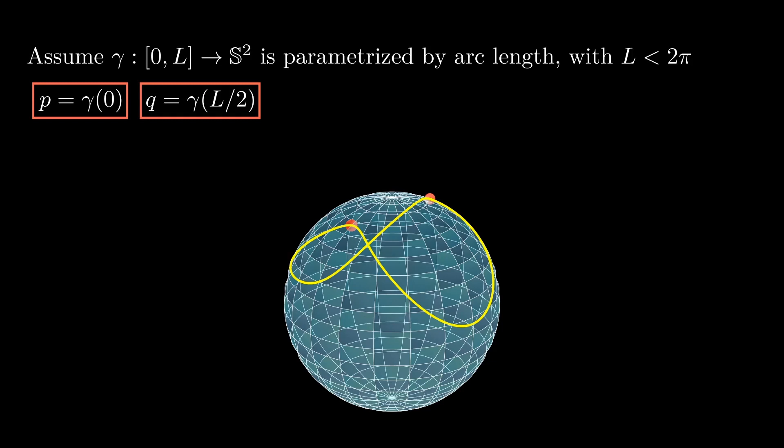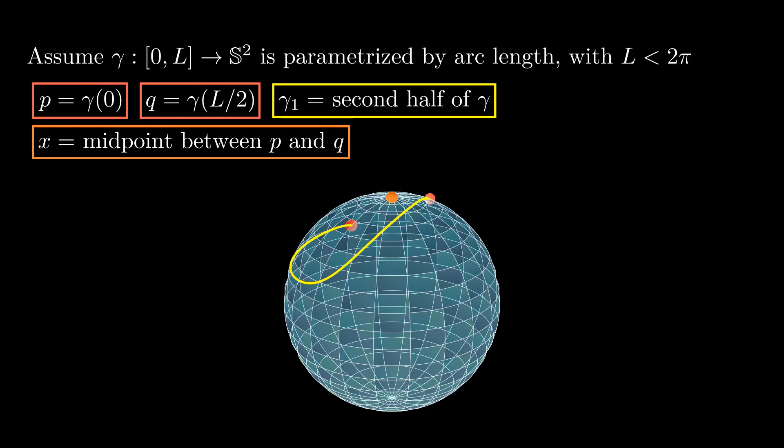Each of them has length L over 2, which is strictly less than π. Now we ignore gamma 0 and let x be the midpoint of p and q in the sphere. What we do next is rotate a copy of gamma 1 by 180 degrees around x, which we call gamma 2. When we put together gamma 1 and gamma 2, they form a closed curve.